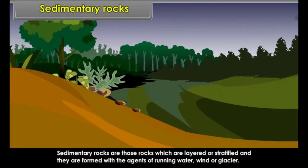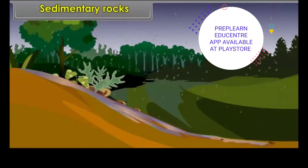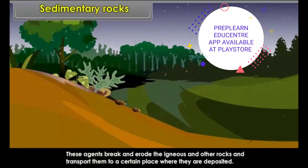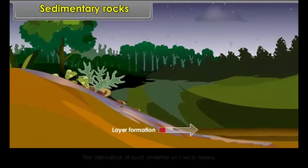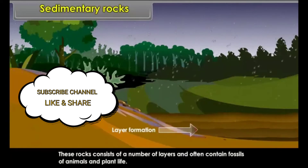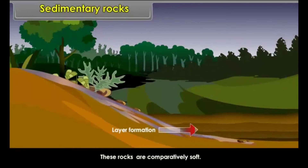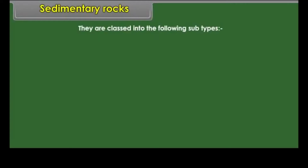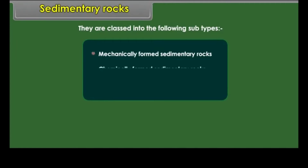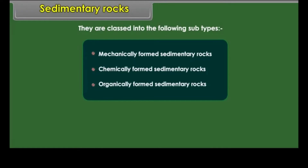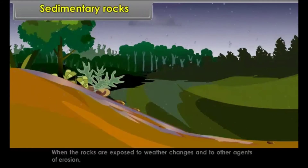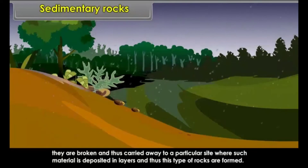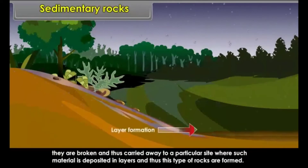Sedimentary rocks are those rocks which are layered or stratified, formed by agents of running water, wind, or glacier. These agents break and erode igneous and other rocks and transport them to a place where they are deposited in layers. These rocks often contain fossils of animals and plant life and are comparatively soft. They are classed into subtypes: mechanically formed, chemically formed, and organically formed sedimentary rocks. When rocks are exposed to weather changes and erosion, they are broken and carried to a site where material is deposited in layers.